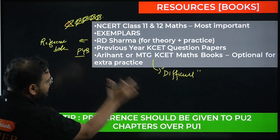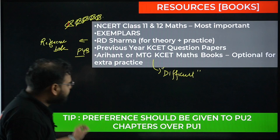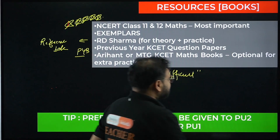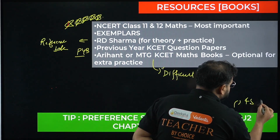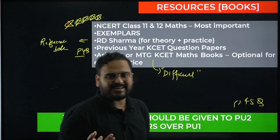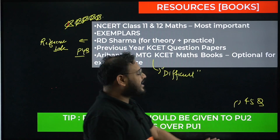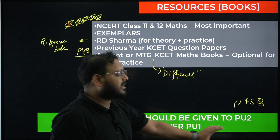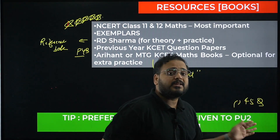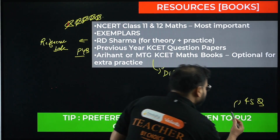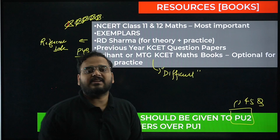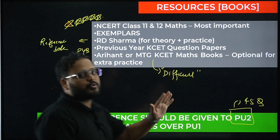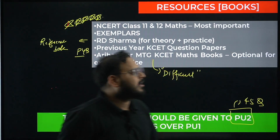An important tip: give preference to PU2 chapters over PU1 chapters. PU2 carries a weightage of about 40 to 45 questions. This year, PU1 had around 20 questions, but typically PU2 dominates with 40 to 45. So PU2 must be your first priority and your first target in preparation — without fail.